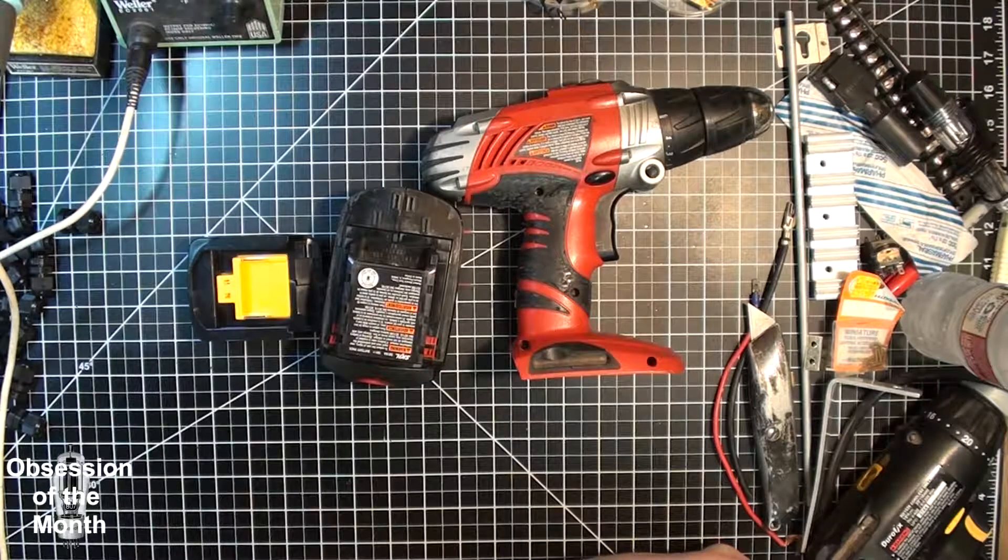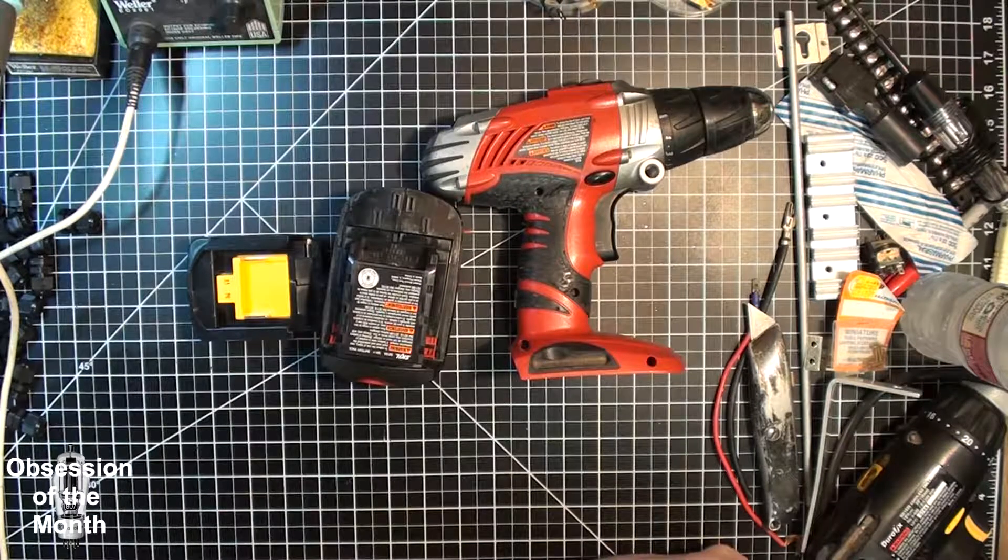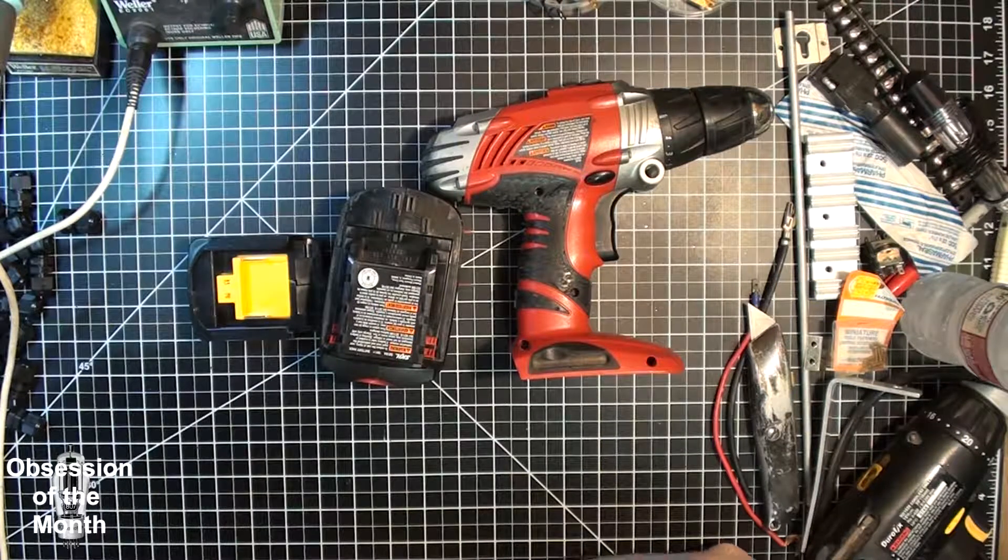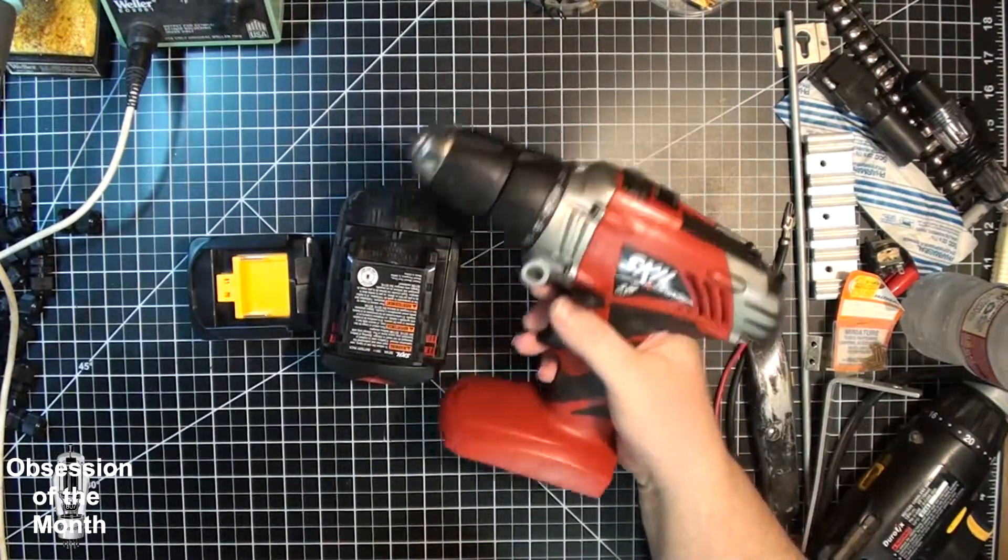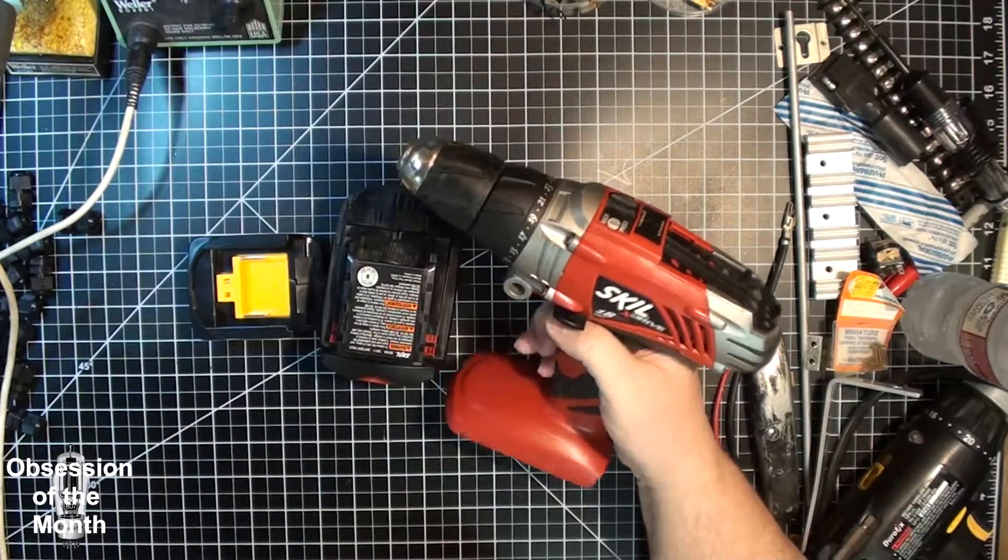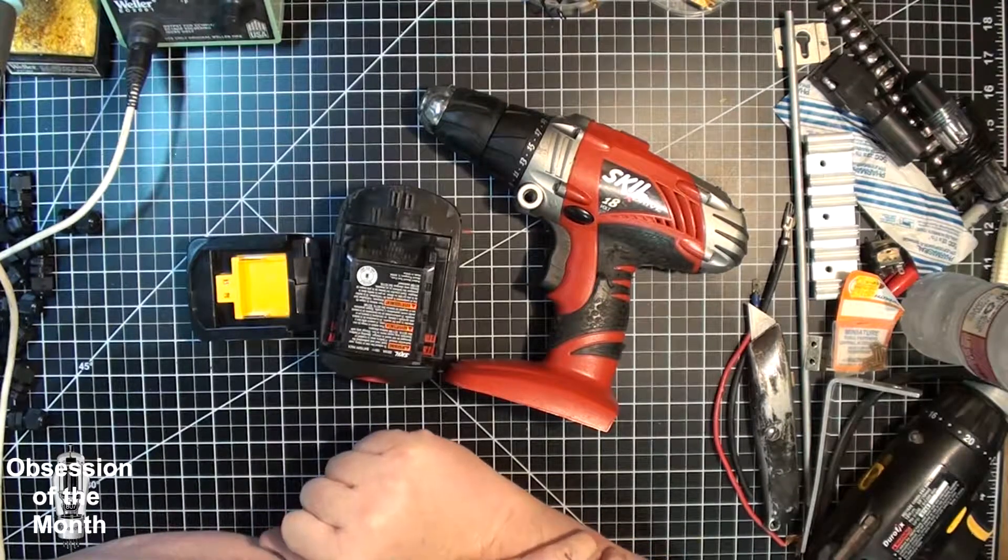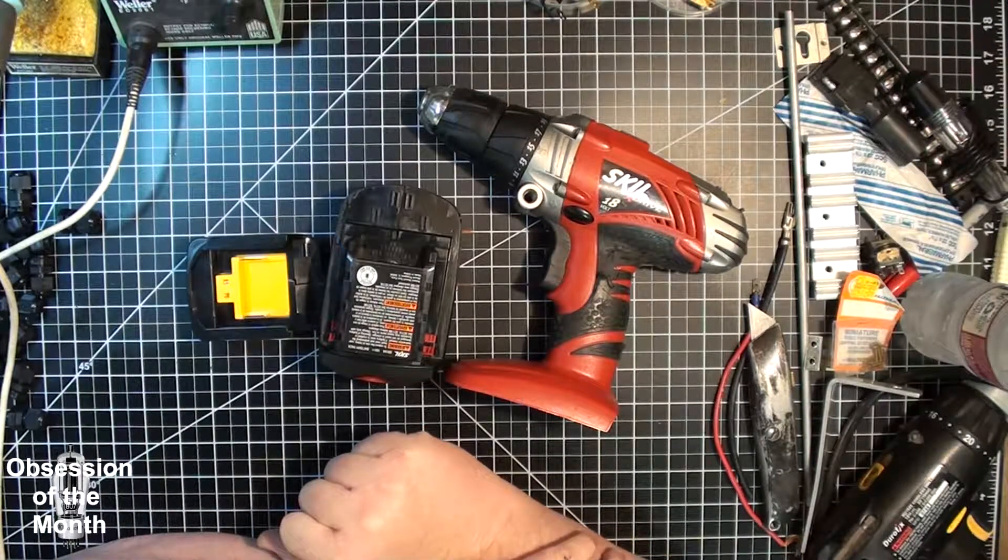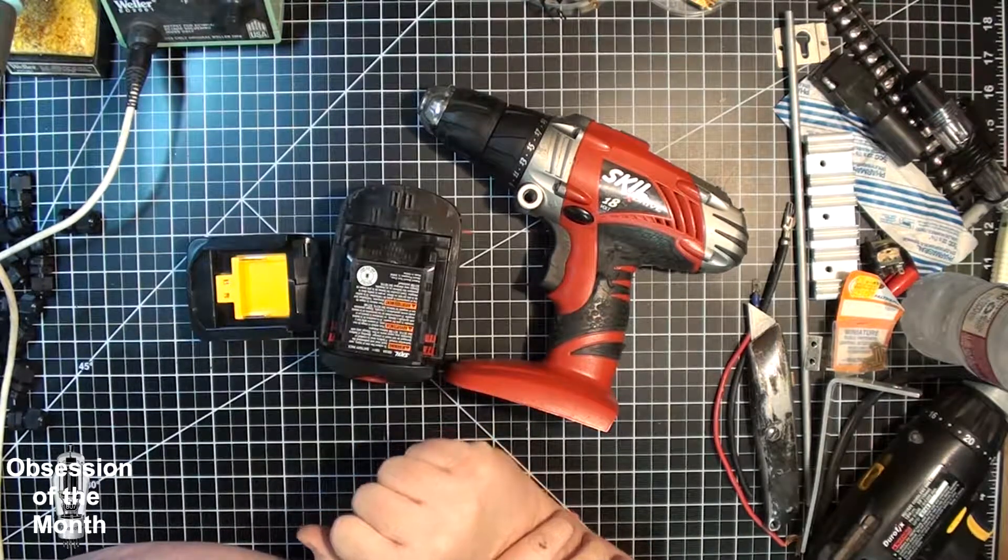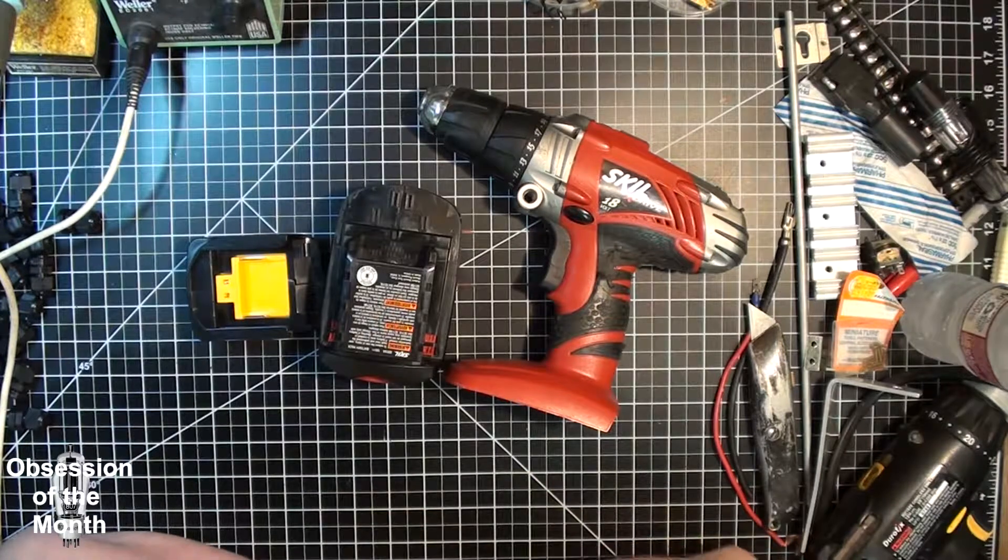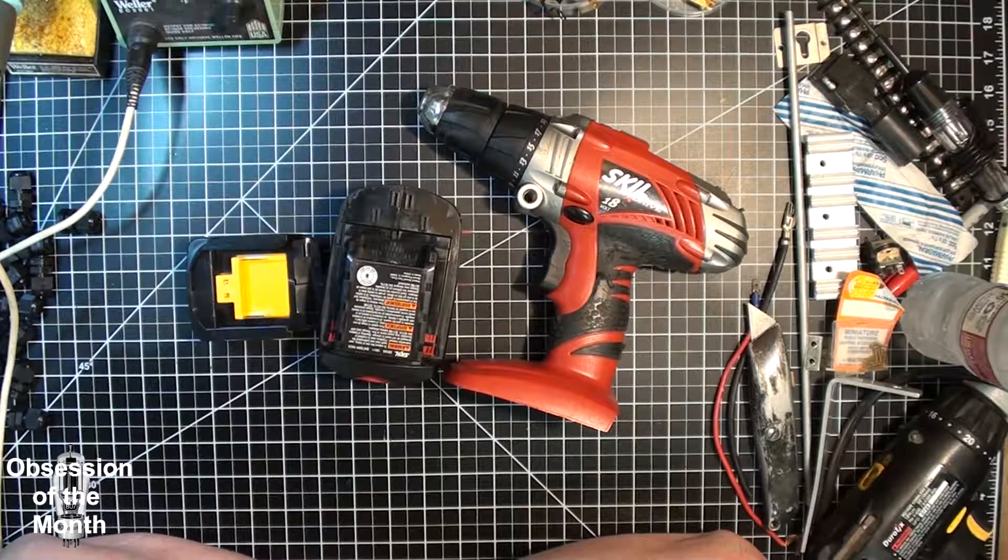Okay, today we're going to work on something that I have been trying to get parts for, for a long time. I was given a bunch of these Skil tools. I have a Sawzall, an actual circular saw, this drill, and even the flashlight. And I got them, but they didn't have a battery with them.